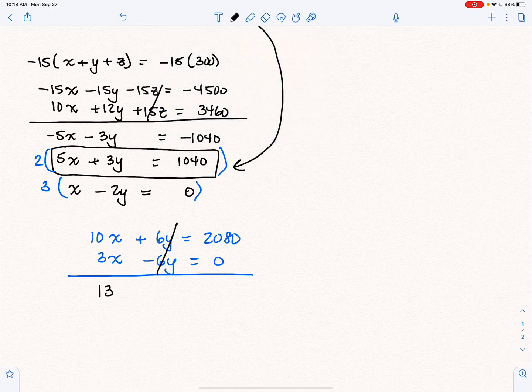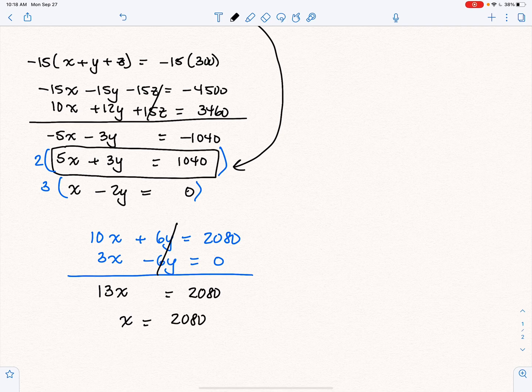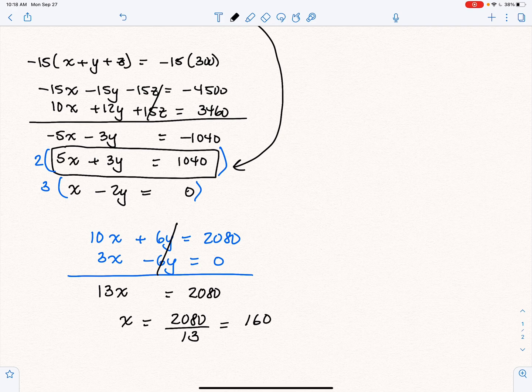So we have 13x equals 2,080, which means x is equal to 2,080 over 13, which I believe is 160. So we have x. Great. How do we get the other variables?